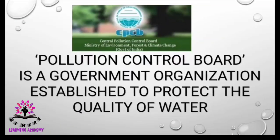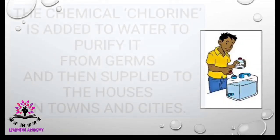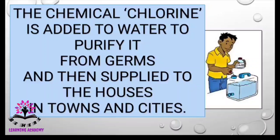A few points to remember: to control pollution, the government has started a Pollution Control Board — a government organization established to maintain the quality of water. Also, a chemical called chlorine is added to water to purify it from germs, and then it is supplied to houses in towns and cities.